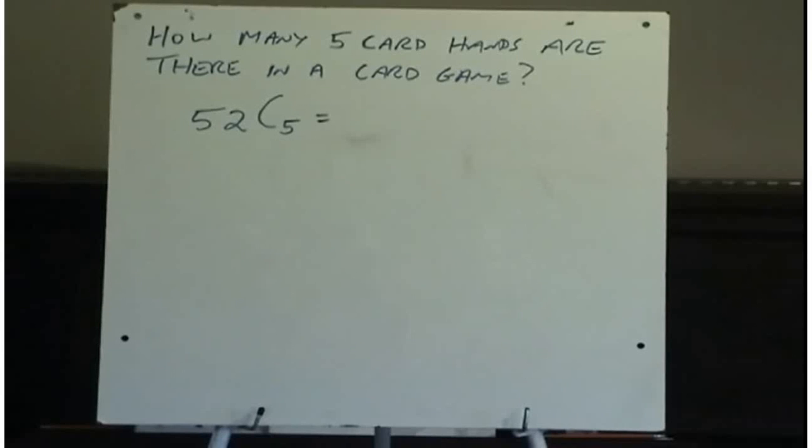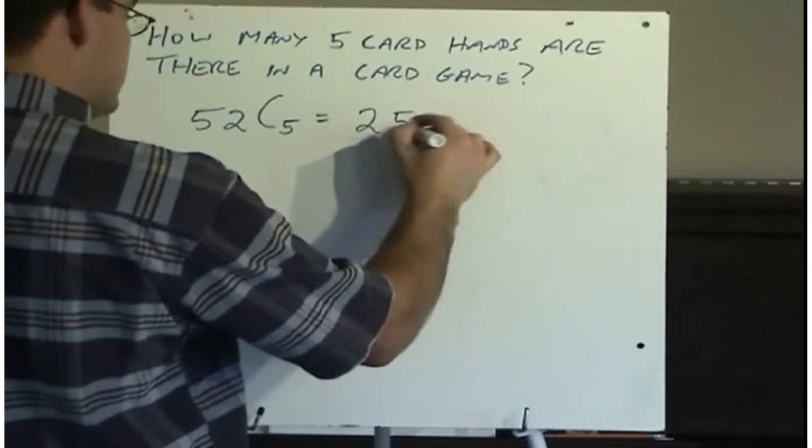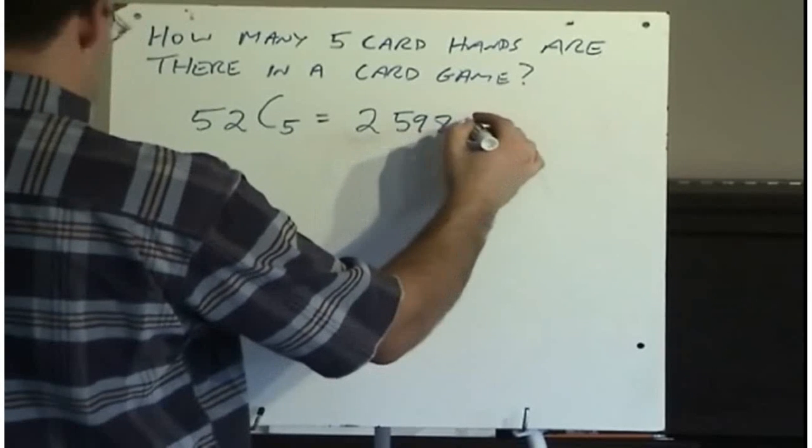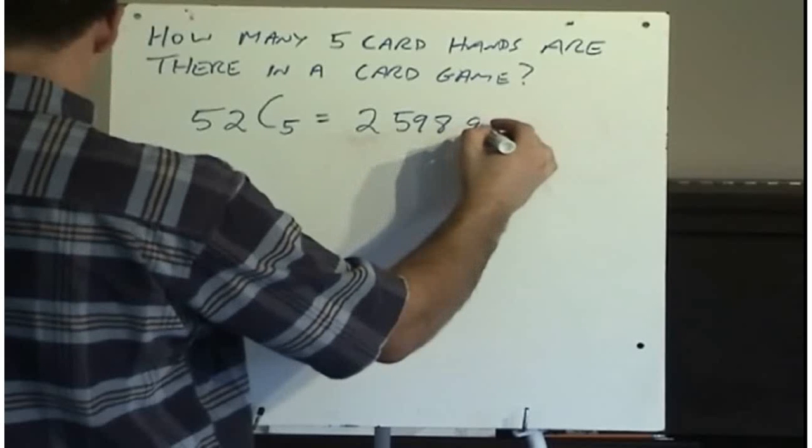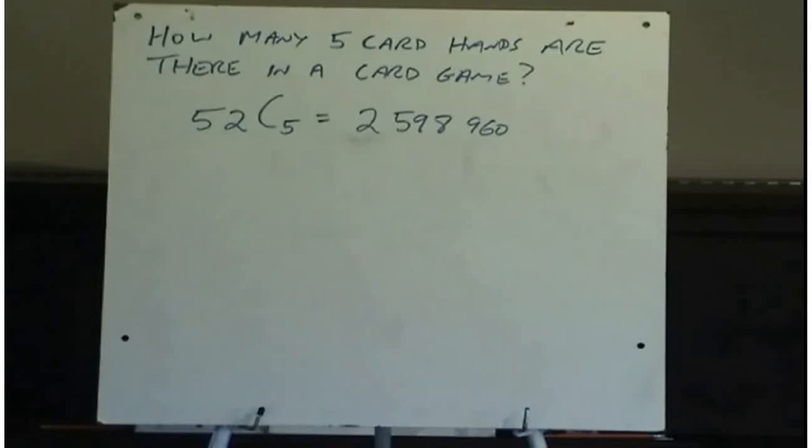would be the number of 5 card hands that we would possibly get. So 52 C5, 2,598,960. So that's quite a few. If you were dealt a 5 card hand, there are 2,598,960 different ways of getting a hand.